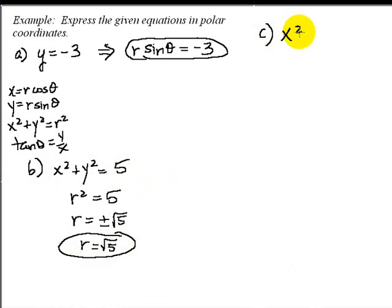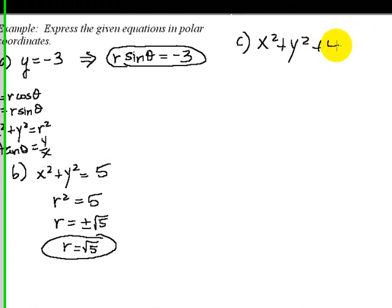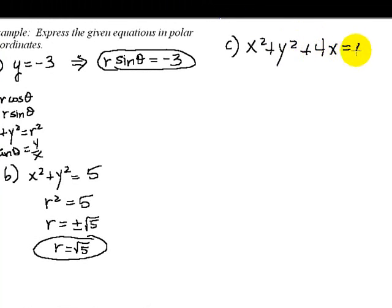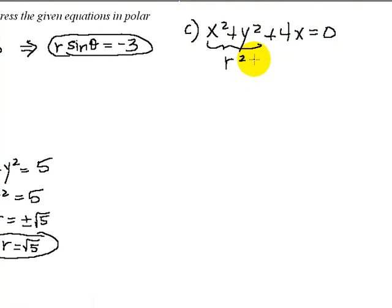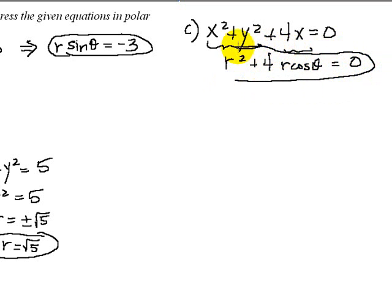Part C, X² plus Y² plus 4X equals 0. All right, you should be able to recognize that that is a circle, but our goal here is to convert it to polar. So replacing X² and Y² with R² and replacing X with R cosine θ, we now have an equation in terms of R's and θs.